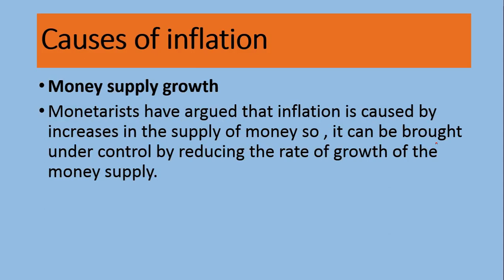Another common reason is money supply. When there is excess money supply, it also leads to inflation. Monetarists say inflation is controlled by the supply of money — the central bank is supposed to control money supply, meaning they supply money in the economy as per demand. If demand is 100 billion and the central bank supplies more than that, people have excess money with no production against it, so more money chases fewer goods. This can be controlled by reducing the growth rate of money supply.